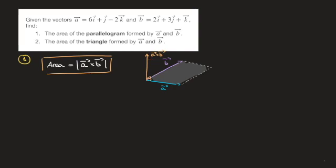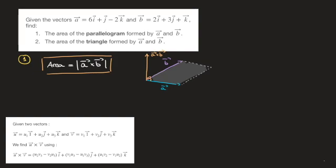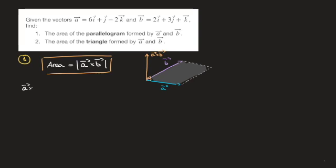I'll use the determinant method to calculate the cross product. So a cross b is equal to the determinant of the 3×3 matrix whose top row is i, j, and k — those are the base vectors — whose second row is the components of vector a, which are 6, 1, and negative 2, and whose third row is the components of vector b, which are 2, 3, and 1.